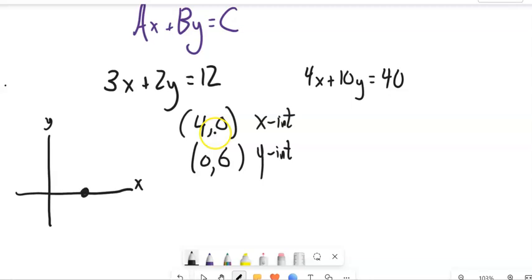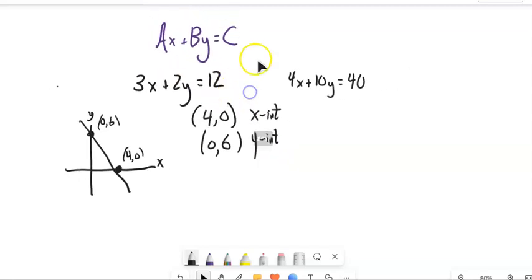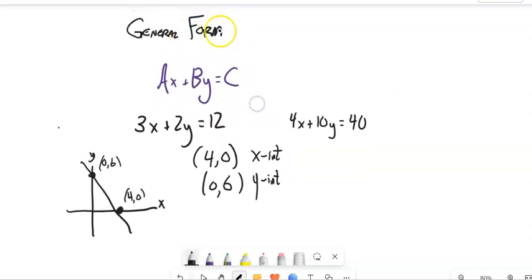It goes through the point 4, 0, so let's say that's about here. And it goes through the point 0, 6, so that's about here. And it's graphed. So general form is a really good form for just graphing x and y-intercepts.